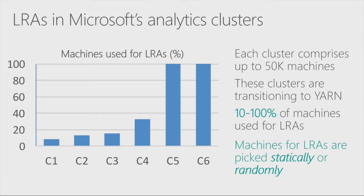Why do we care at Microsoft about LRAs? Here I show the percentage of machines used for long-running applications across six of our typical clusters. Each of these clusters comprises up to 50,000 nodes. We are currently transitioning to Yarn. Across all of these clusters, at least 10% of the machines are used for long-running applications, and we actually have two big clusters dedicated to long-running applications. So it's quite important for us.